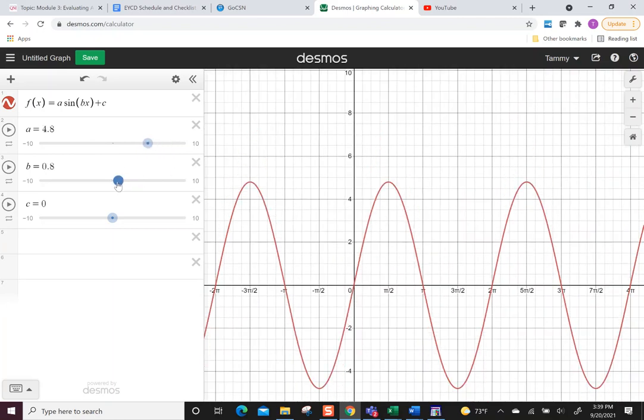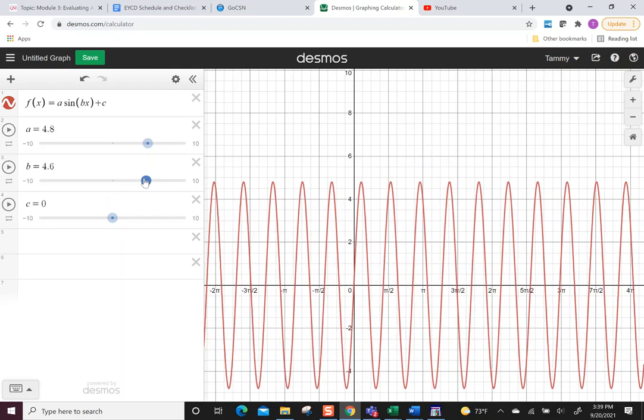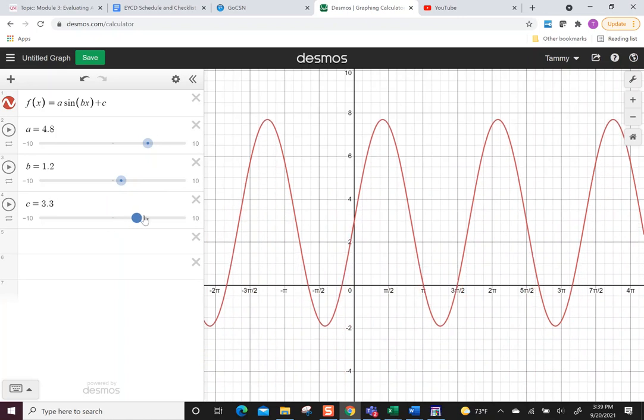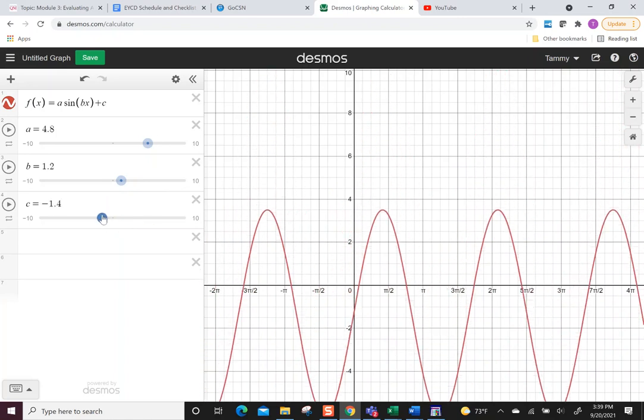Same thing with the b. b will change the period. So come in, go back out, and then c is going to move it vertically, either up or down.